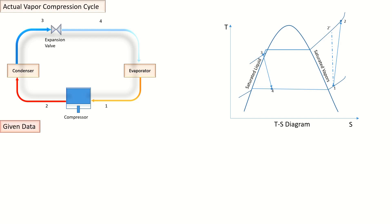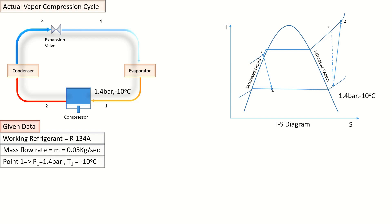Suppose following data is given: working refrigerant is R134A, mass flow rate is m = 0.05 kg per second. At Point 1, which is at superheated region, pressure is P₁ = 1.4 bar and temperature is T₁ = -10°C.